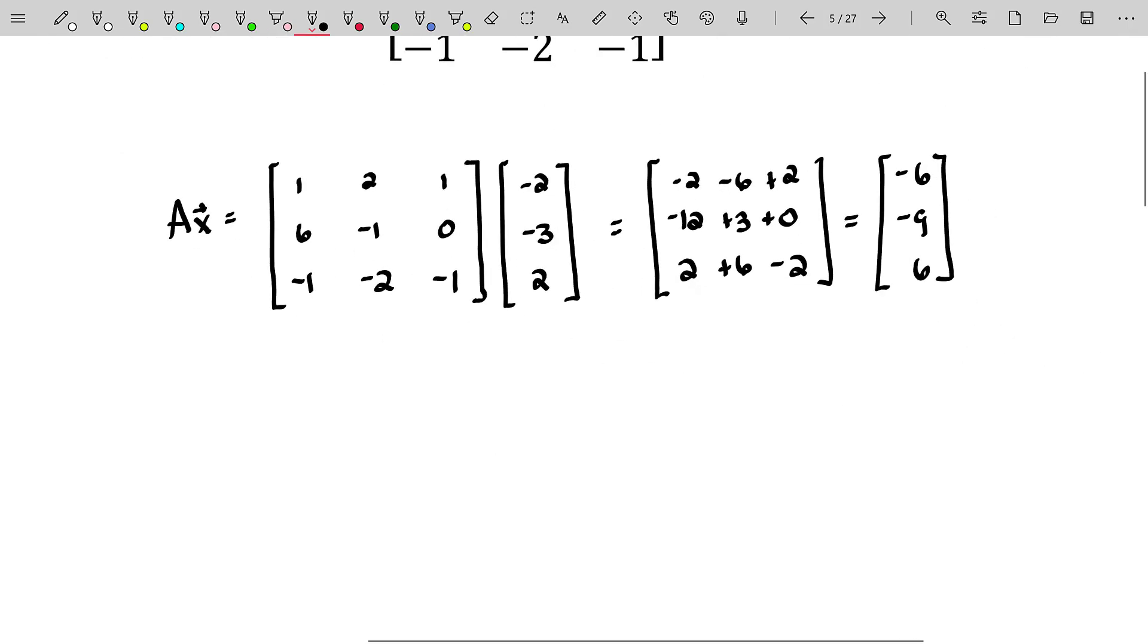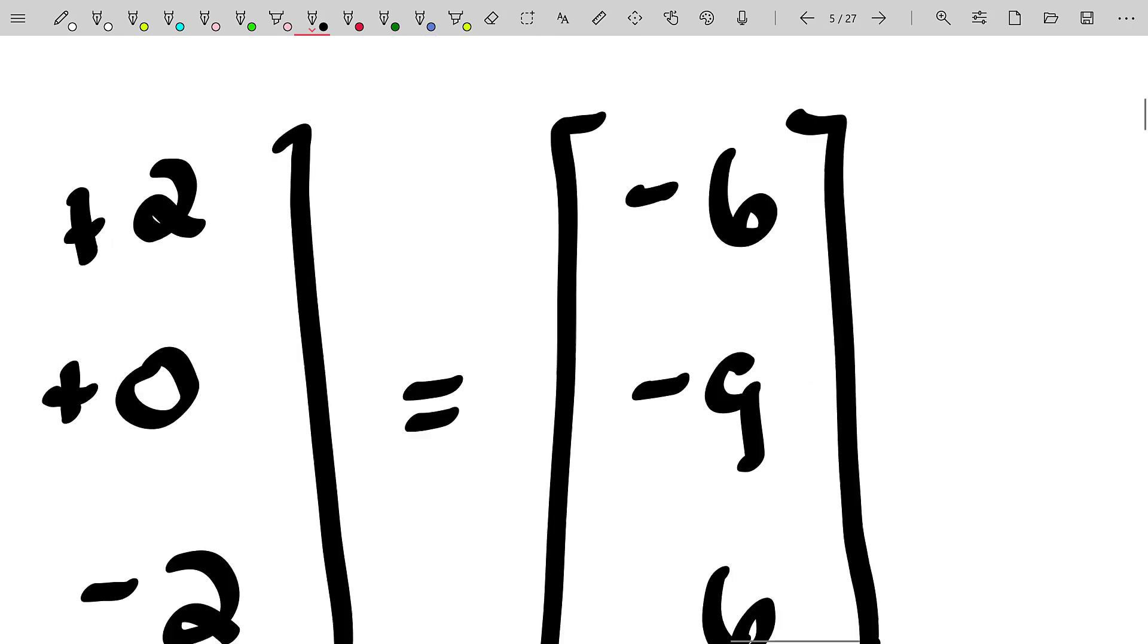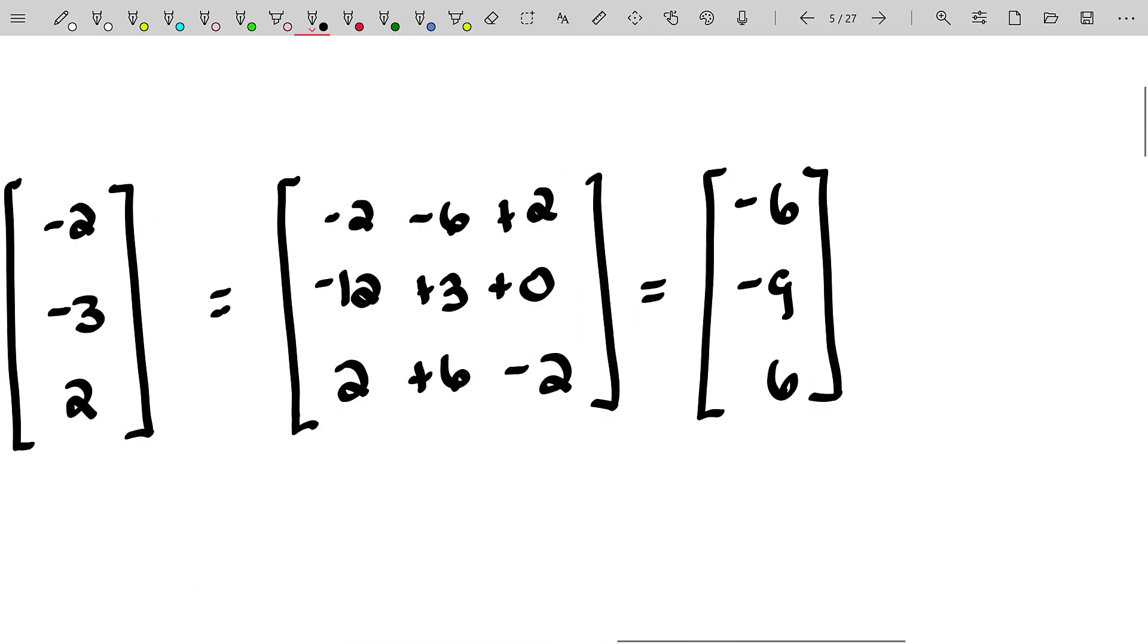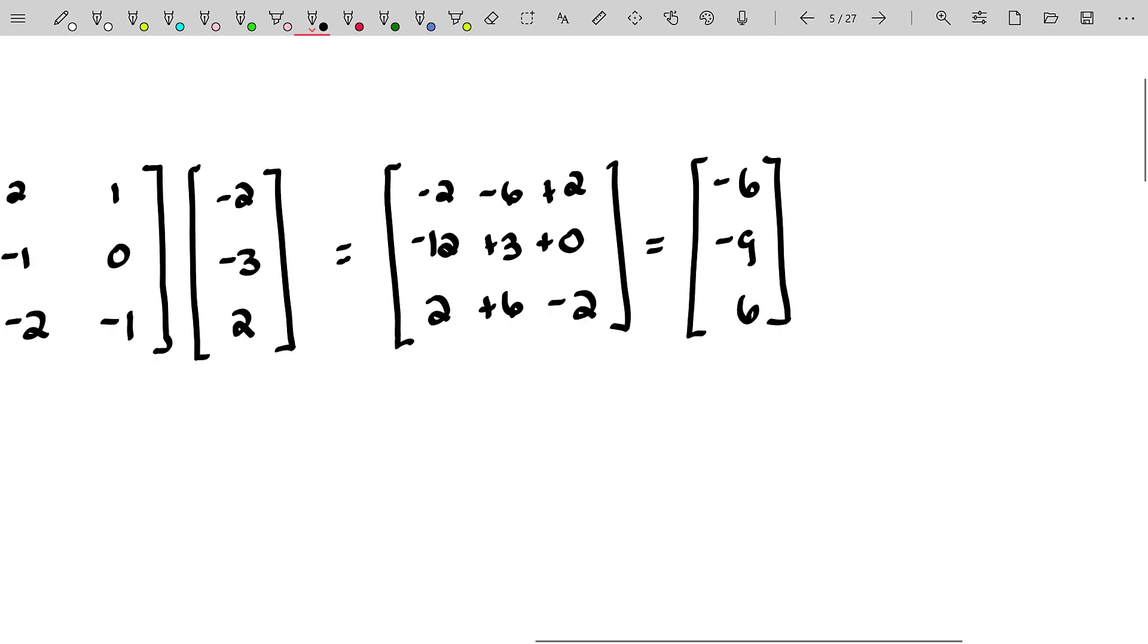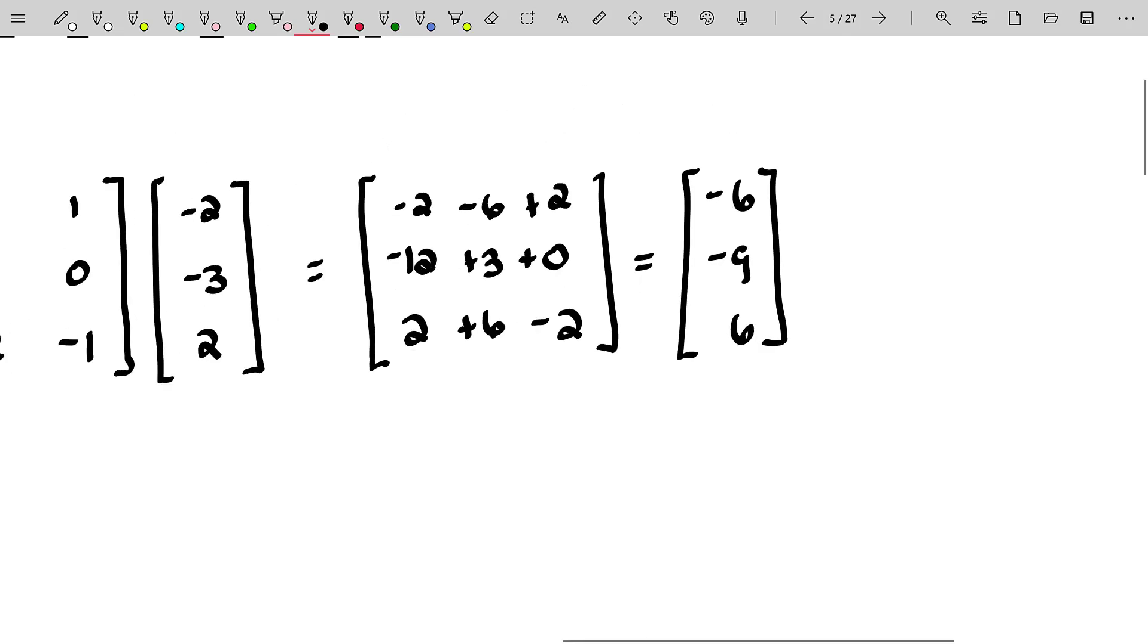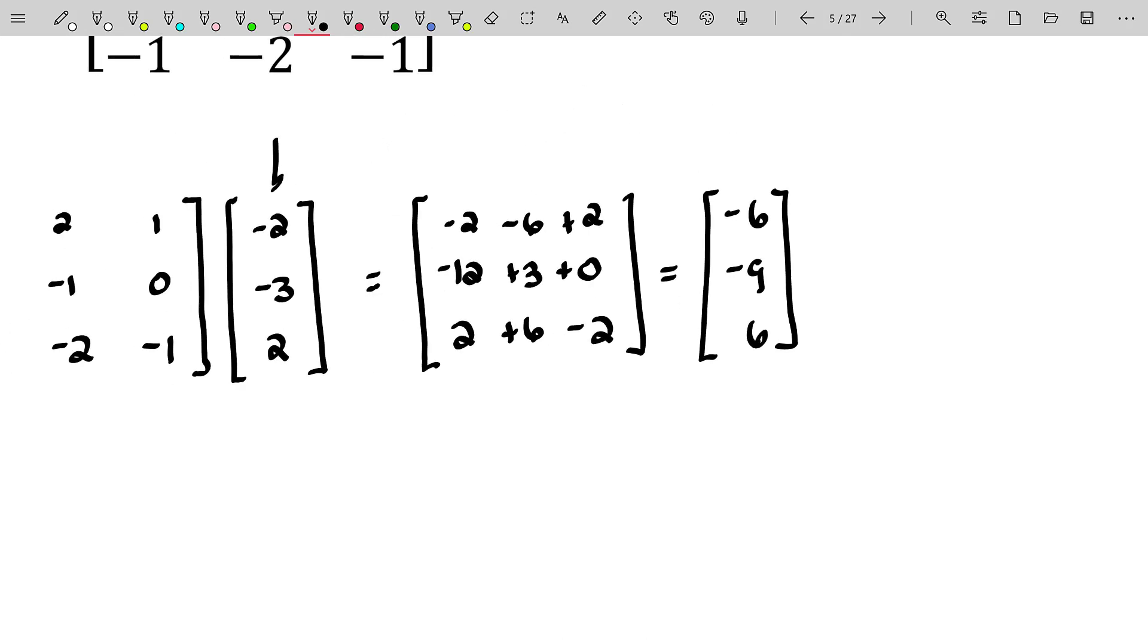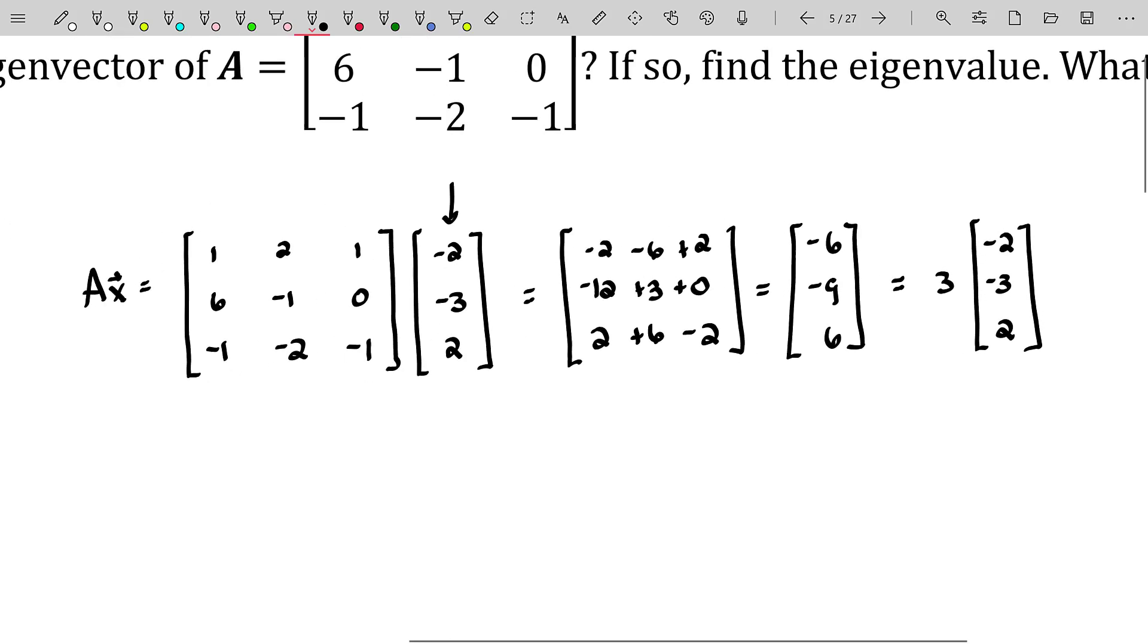You get to this point right here and you say, well, no, sure doesn't look like it because the result is an X. But guess what? That's not what the result should be. If it's an eigenvector, it should be a multiple of the original X. Well, let's see if this is actually a multiple of the original vector, which is negative two, negative three, two. And the answer is undoubtedly yes. A times X is equal to three X. So X is an eigenvector and the associated eigenvalue for that eigenvector is three.